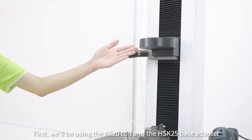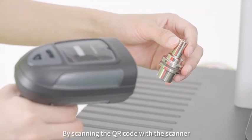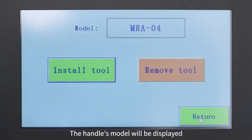we will be using the K620 coil and the HSK25 base adapter. By scanning the QR code with the scanner, the holder's model will be displayed.